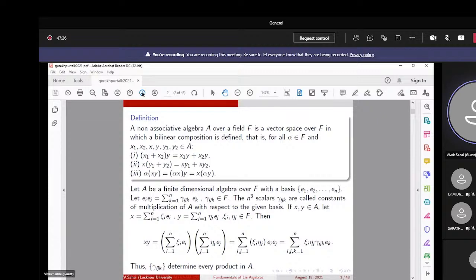That is, for all alpha in the field and x₁, x₂, y₁, y₂, x, y in A, these distributive laws hold, and alpha(xy) is the same as (alpha x)y is the same as x(alpha y), so alpha can move around. For x, y in A, xy also belongs to A.